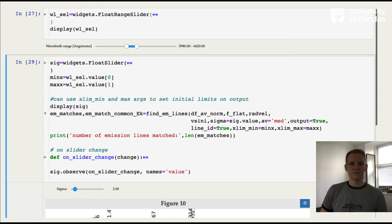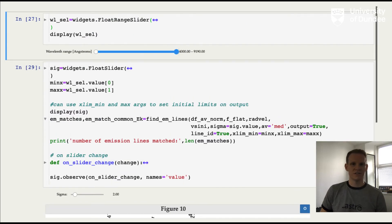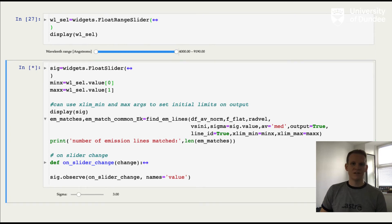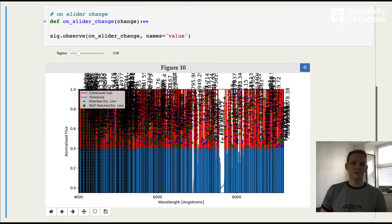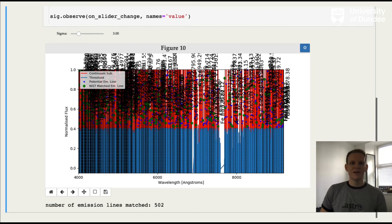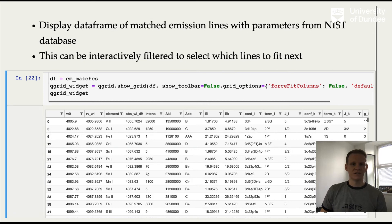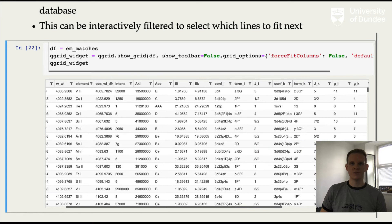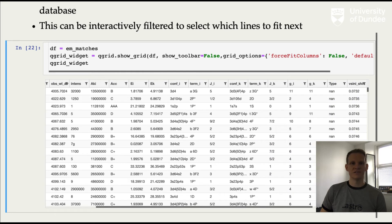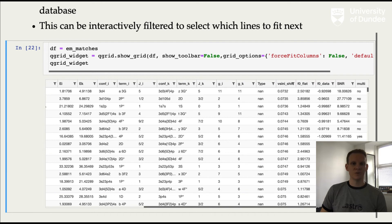And then if we select the full wavelength range and rerun this identification, we now have all of the lines from the spectra that are matched within this database for this star, for this observation. So this can be repeated for any observation you like, with any star you like. We can now display this data frame of your matched lines, in this case interactively using the QGrid package. So this includes all of the properties from the database for each of the lines, some of which are going to be important for our analysis, such as the energy of the levels and the transition probabilities.